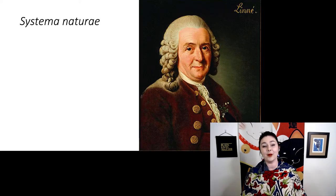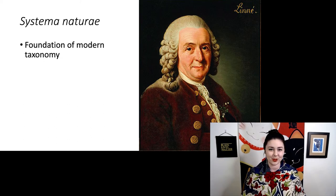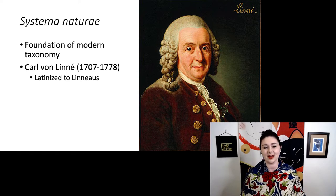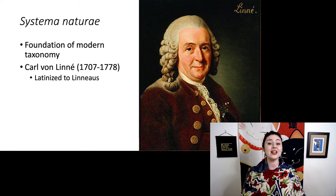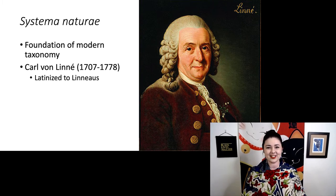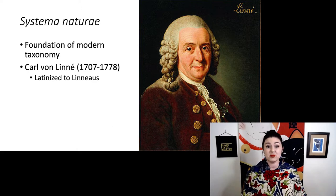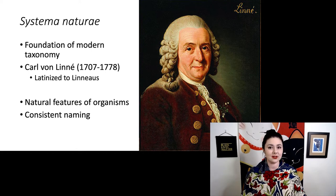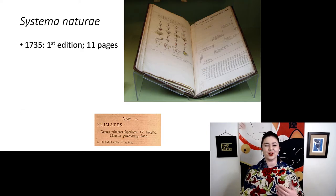Once we know those relationships, we want a standardized system to name them. This goes back to the Systema Naturae, which is the foundation for modern taxonomy. This was put together by Carl von Linné — it was the fad at the time to Latinize your name, so that's why we now call him Linnaeus, though that's not actually his original name. His system is something we still use today because it just works really well. What's kind of funny is he was pre-Darwin, but just by happenstance, it works so well with how we understand the natural world. The features of his system: he uses the natural features of organisms to classify them, very consistent naming, and hierarchical groupings.